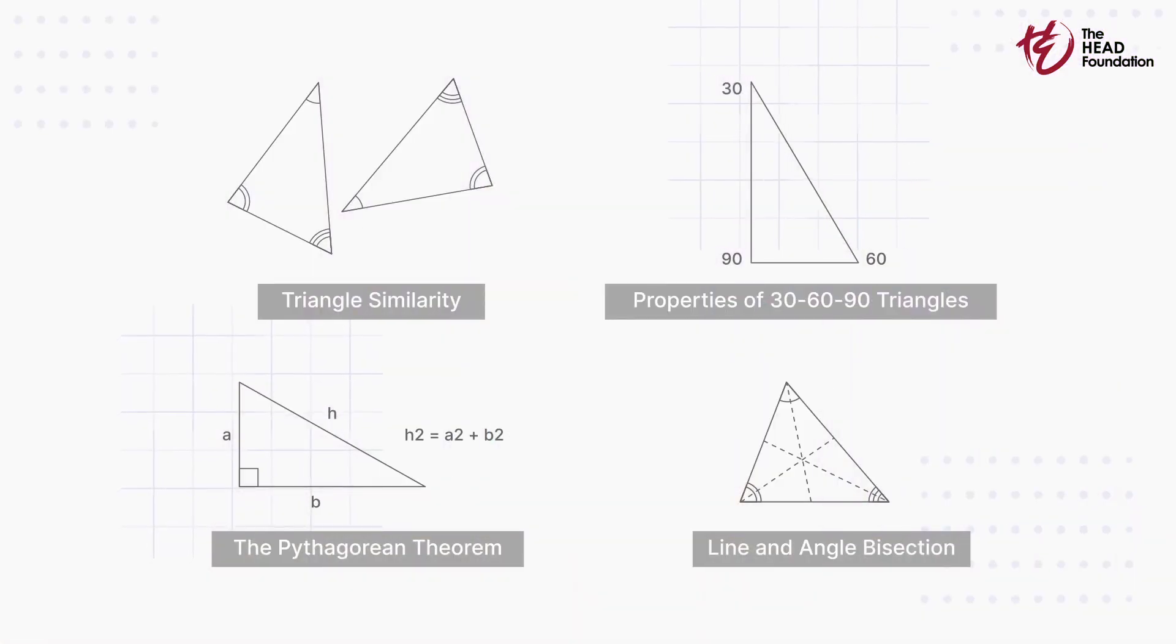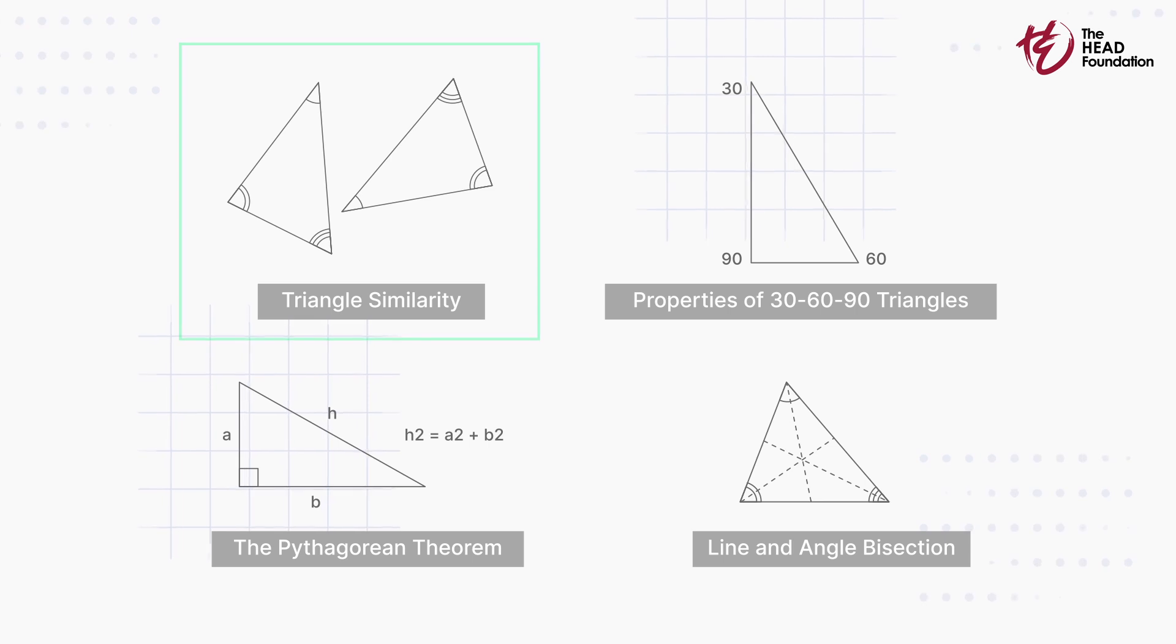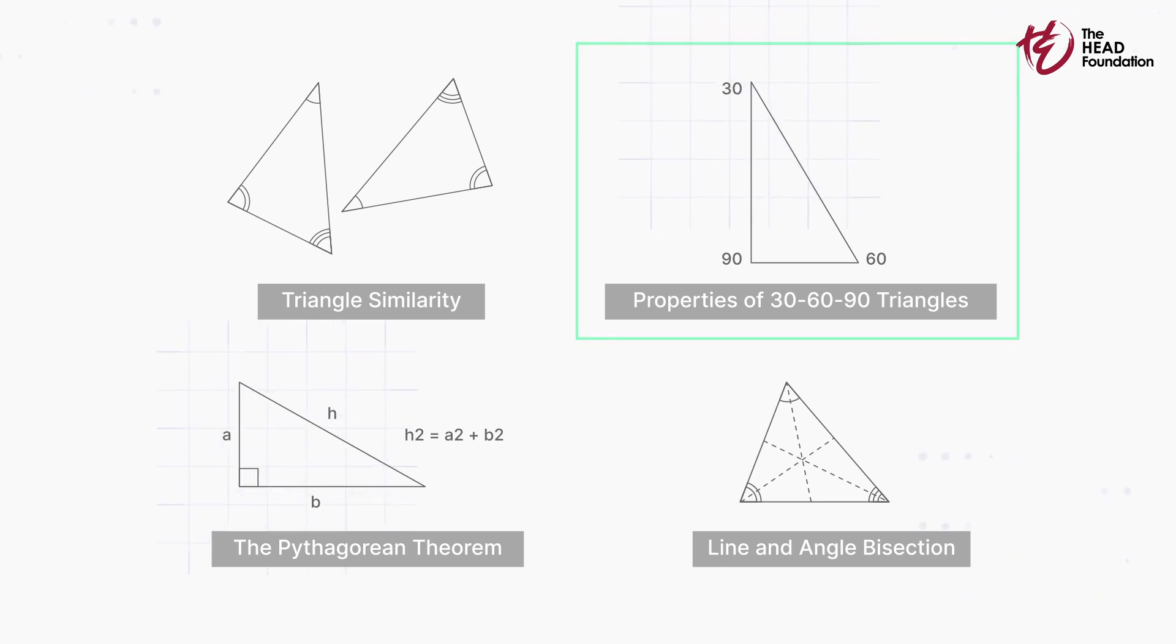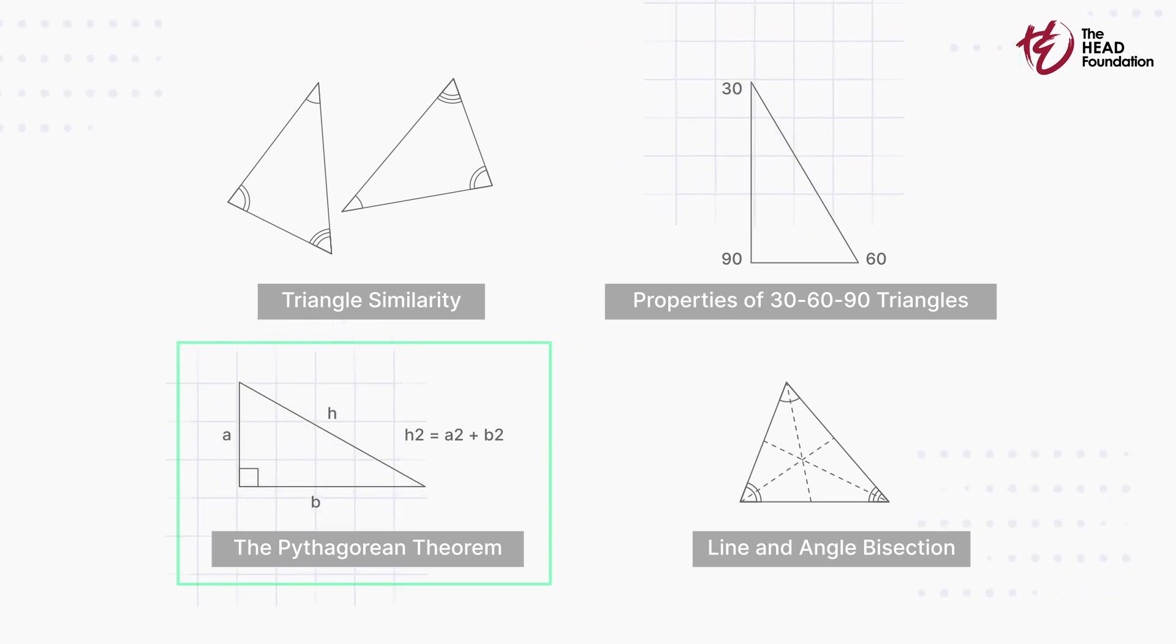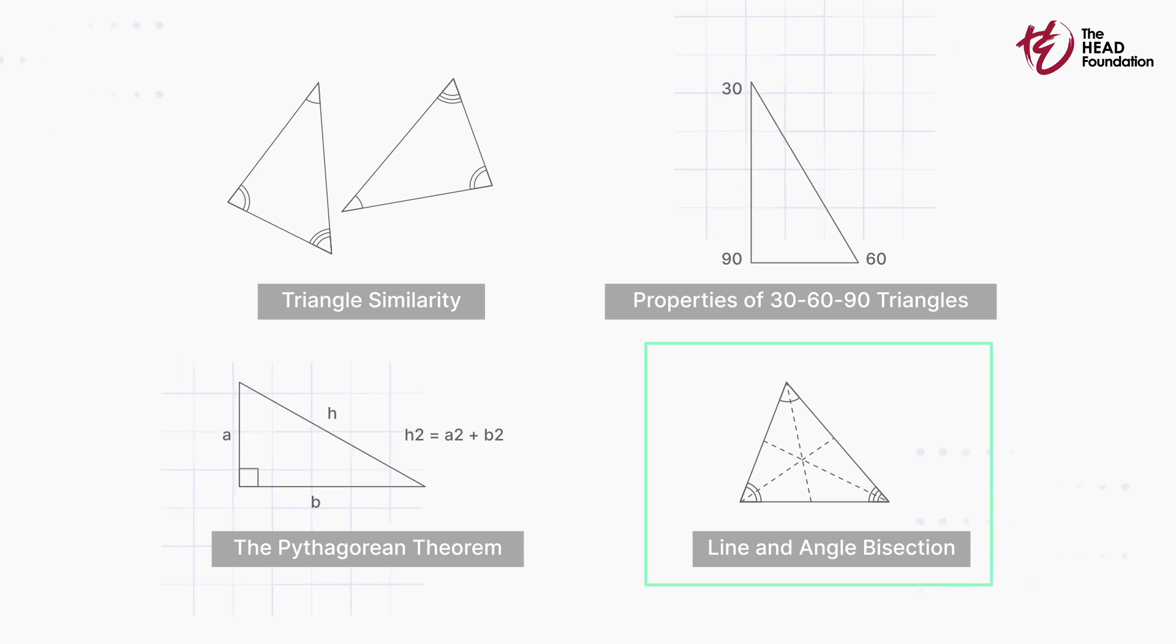For this origami activity to really unfold its potential, it's crucial that our students come equipped with an understanding of triangle similarity, the properties of 30-60-90 triangles, the Pythagorean theorem, and the basics of line and angle dissection.